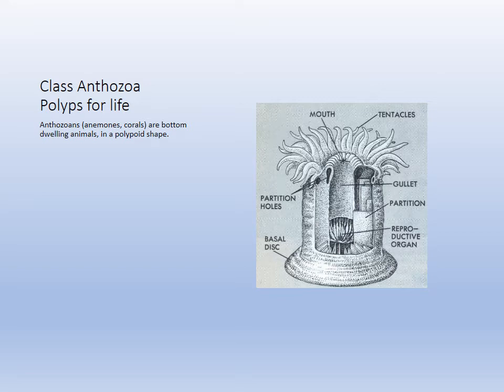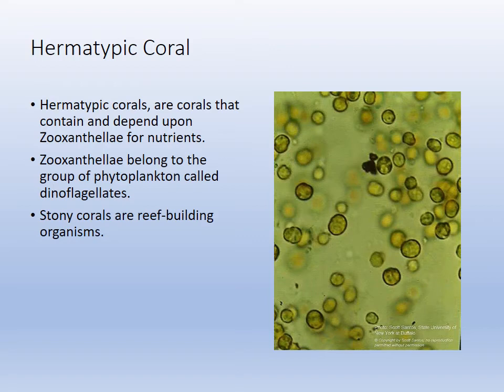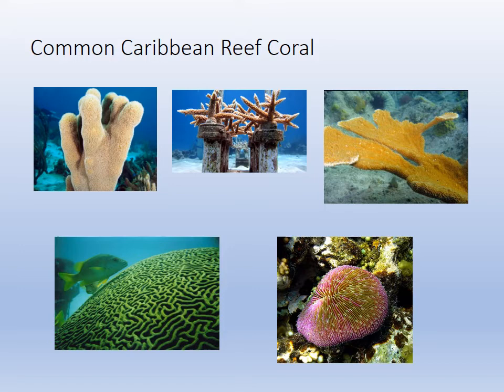Class Anthozoa are polyps for life — the corals and anemones — and they broadcast spawn. Coral can be hermatypic, meaning it has zooxanthellae, a type of dinoflagellate living in their tissue. They need light and shallow water — those are the reef-building corals. Ahermatypic corals are the soft corals: sea whips and sea fans that can be found anywhere and don't build reefs. Reef-building corals include pillar coral, staghorn, elkhorn, brain coral, and mushroom coral — all hermatypic and found in the Caribbean reef tract.